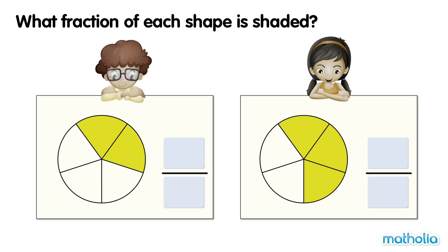What fraction of each shape is shaded? This circle is divided into five equal parts. Two parts are shaded. Two fifths of the circle are shaded.